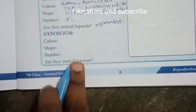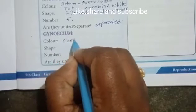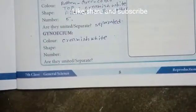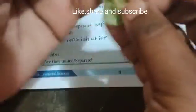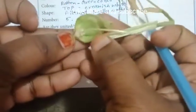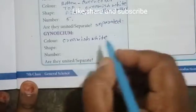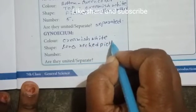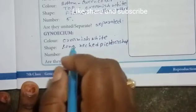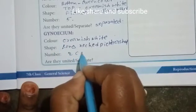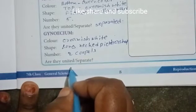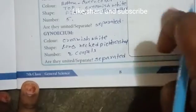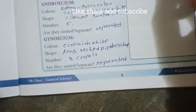The gynoecium is also creamy white in color. It is in a long, naked, picture-like shape. There are two carpels — two parts — and they are separated. Here we draw the gynoecium and androecium parts. You draw the datura flower in its vertically cut shape.